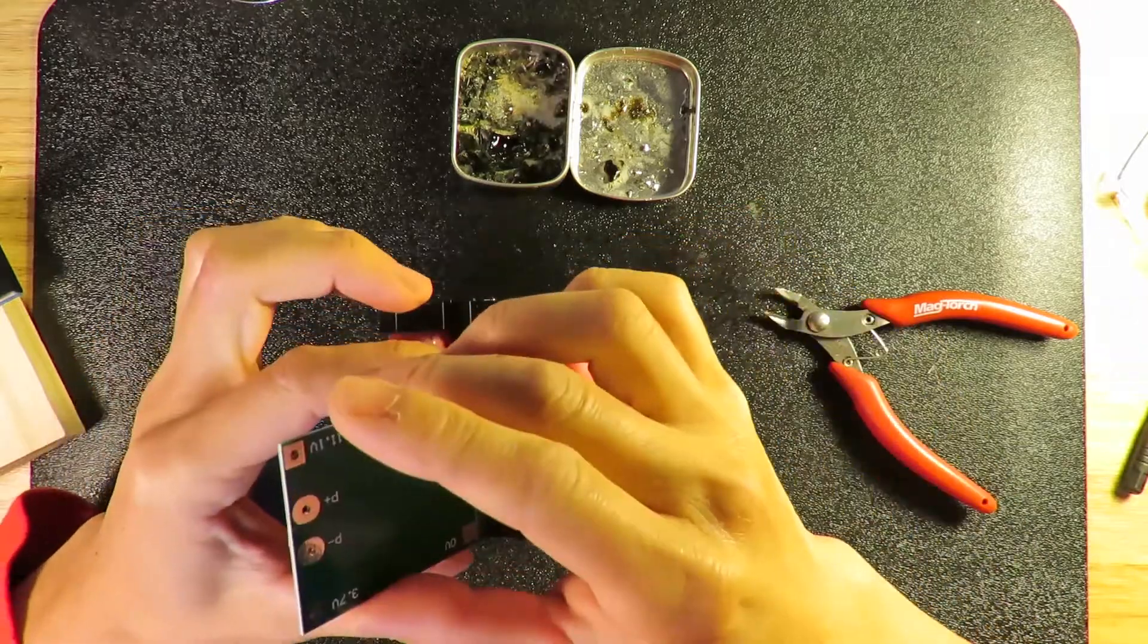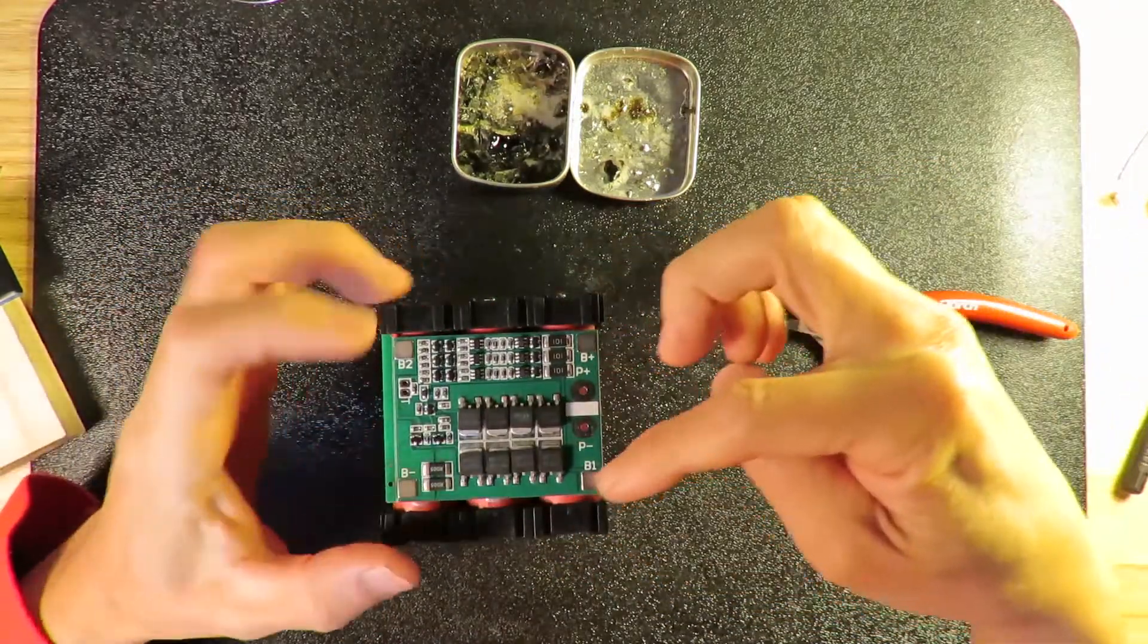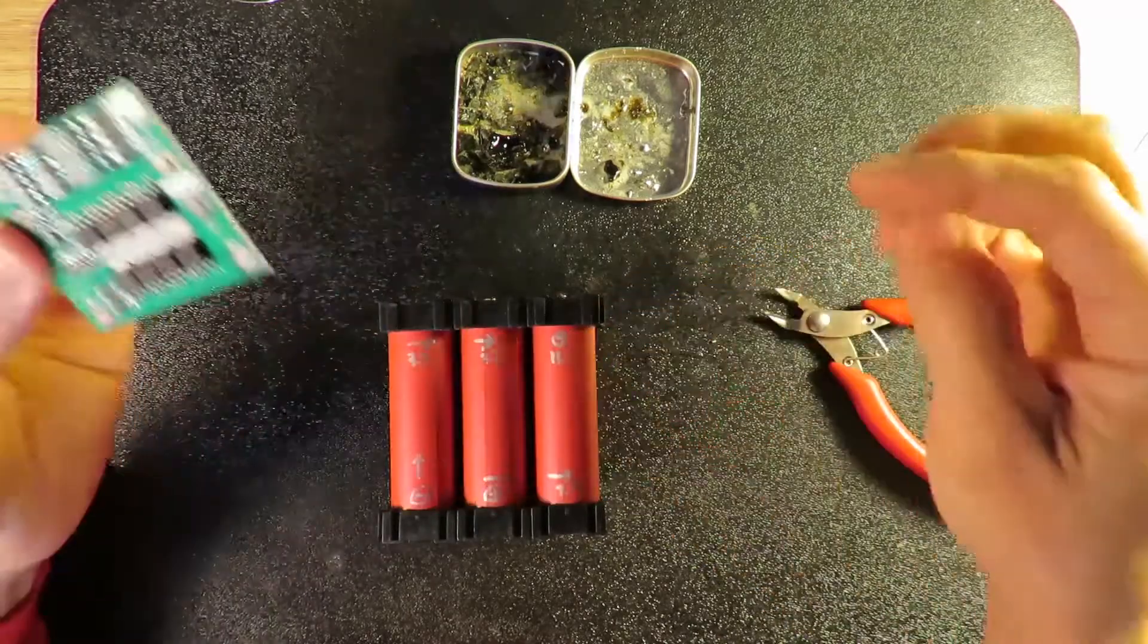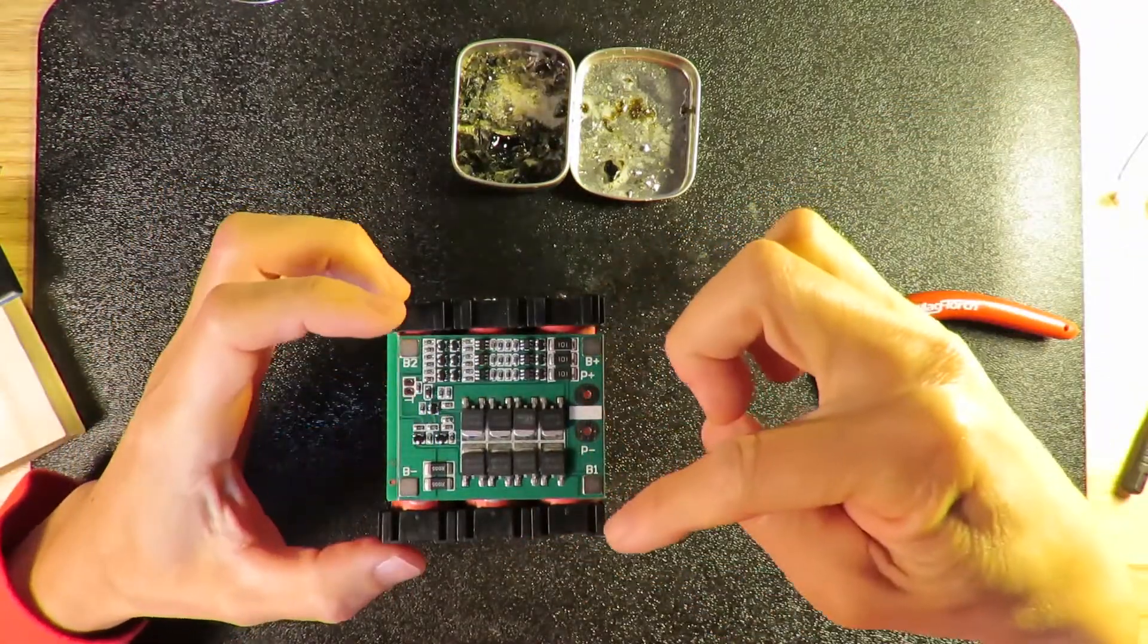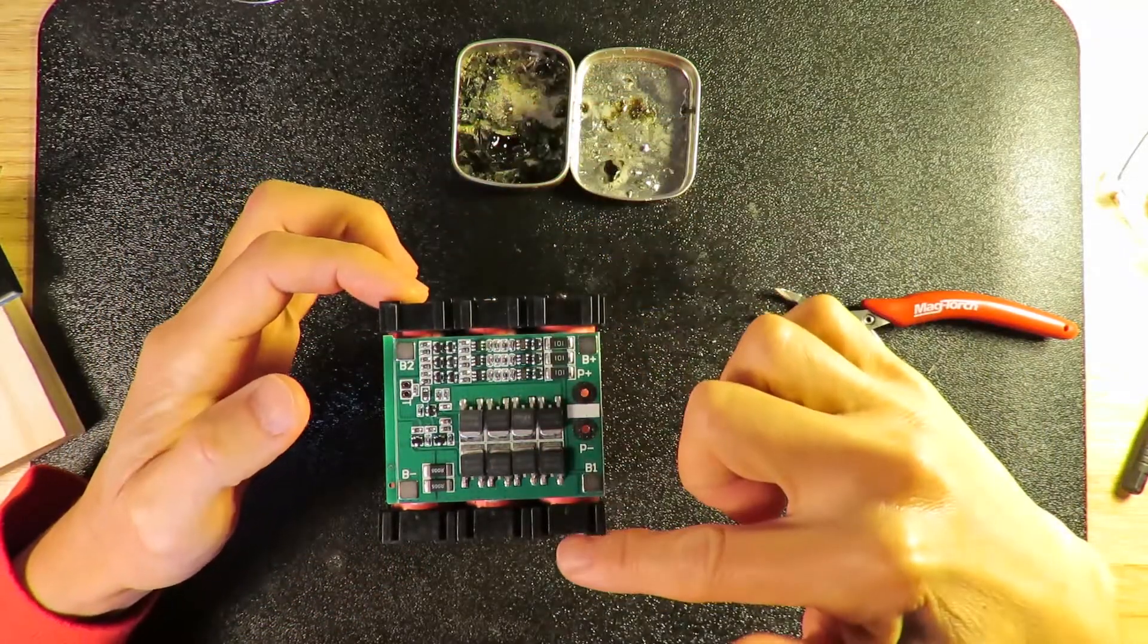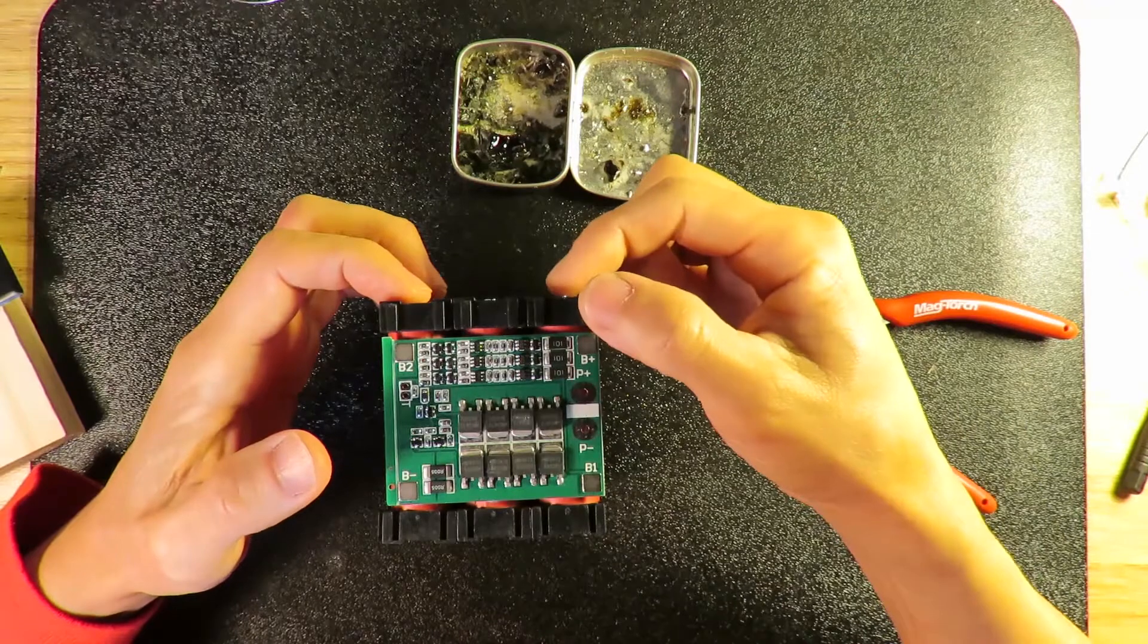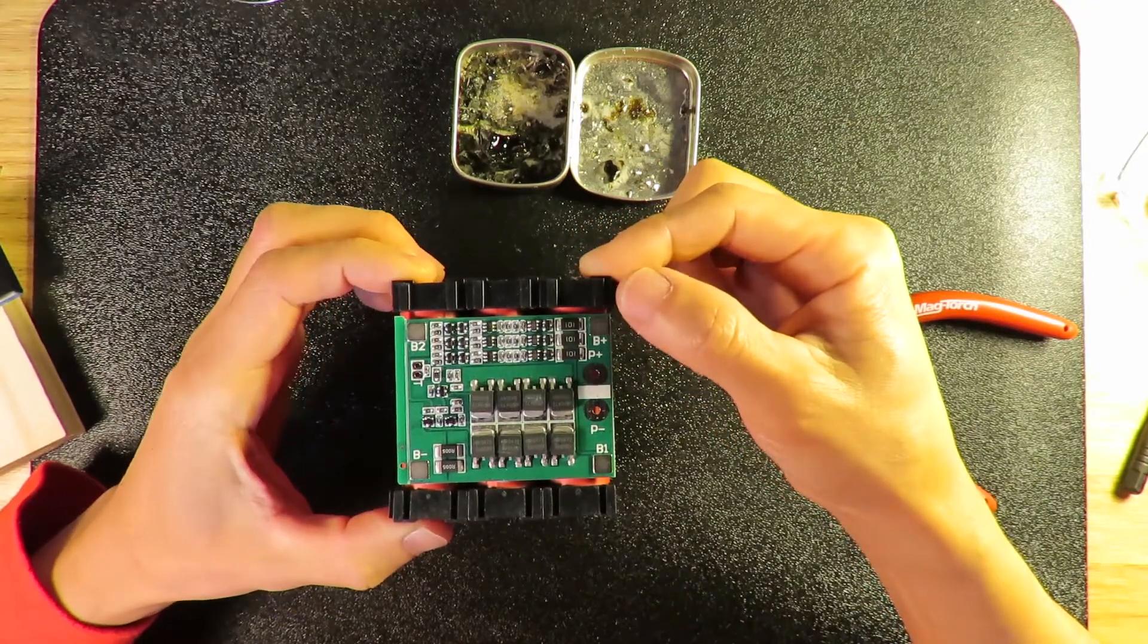So the B1 is 3.7. Basically B1 has to go here, and B2, which is 7.4, has to go here. So basically B2 has to go here. And eventually this one goes to monitoring 11.1, the 12 volt, and this is negative. Let's make the connection.